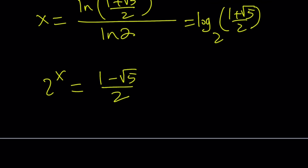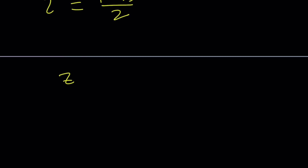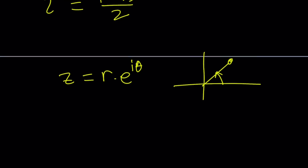Obviously, when you take the ln of a negative number you're going to run into issues, because ln is only defined for positive numbers - but that's in the real world. In the complex world, you can take the complex logarithm. To take the complex logarithm, it's better if you can write the number in Euler's form. Any complex number z can be written as r times e to the power i times theta, where r is the modulus and theta is the angle the number makes with the positive x-axis.